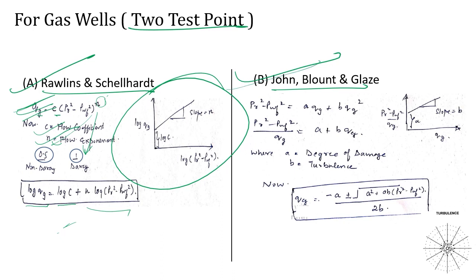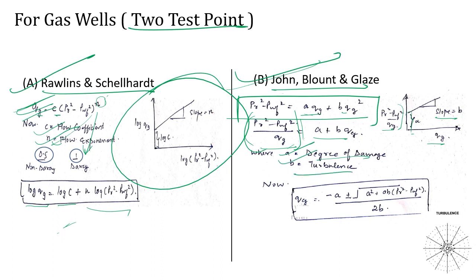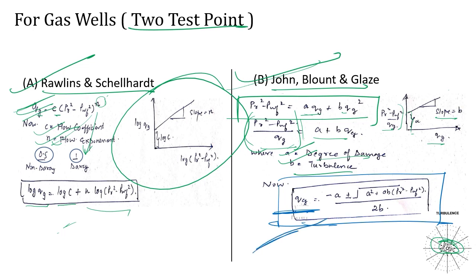The Jones, Blount, and Glaze method uses: P_r² − P_wf² = a·q_g + b·q_g². Dividing both sides by q_g gives (P_r² − P_wf²)/q_g = a + b·q_g — a straight line with intercept a (damage) and slope b (turbulence). Flow rate can then be solved as: q_g = [−a + √(a² + 4b·(P_r² − P_wf²))] / (2b).